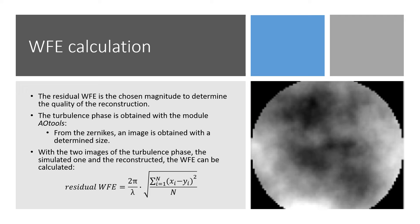The results will be shown in terms of residual wavefront error. The residual wavefront error determines the similarity between two images by calculating the root mean square error of the difference pixel by pixel of both images. If both images were identical, the RMSE would be 0. The higher the value, the more different the images will be. The residual wavefront error is calculated as shown in the slide, where x represents the pixels of the original image, y the reconstructed ones, and n the total number of pixels.